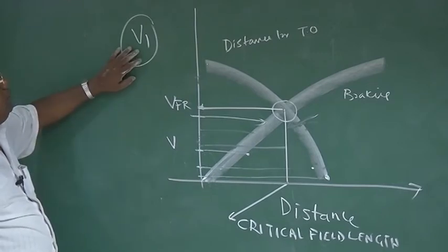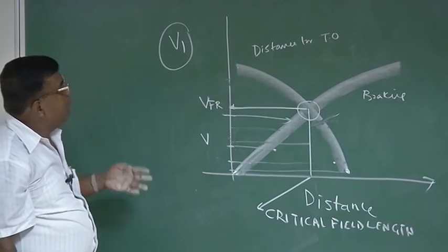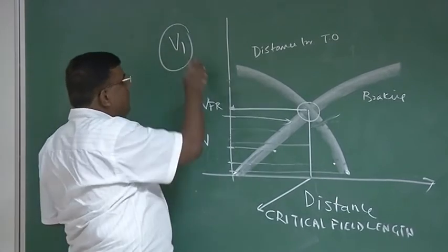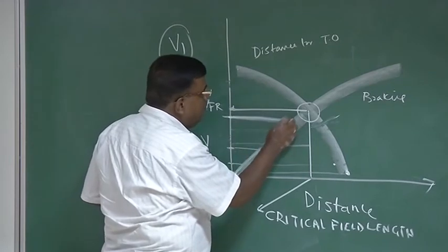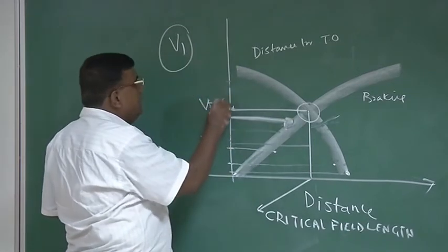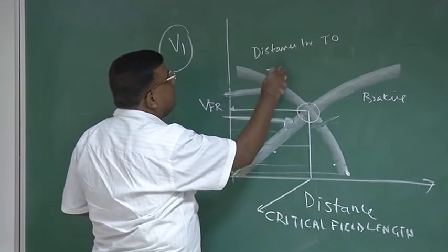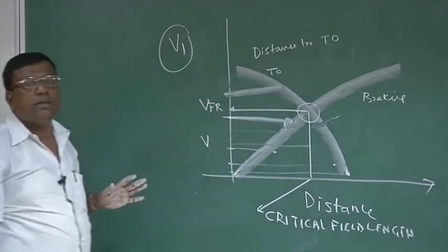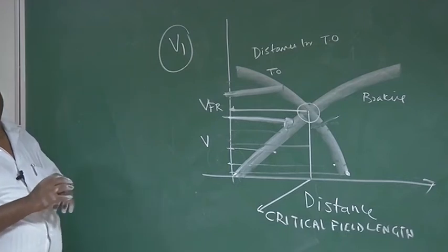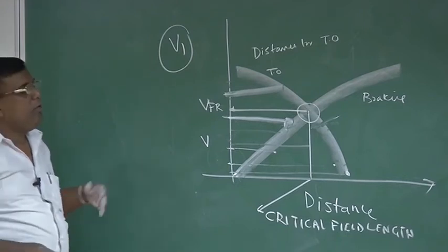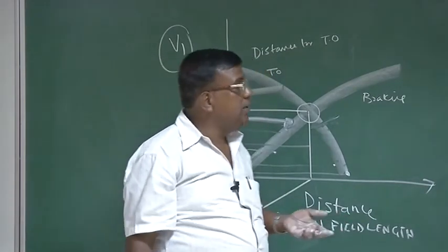There is a point where both the braking distance and the takeoff distance are the same. That distance is called the critical field length, also known as the balanced field length. The corresponding speed is called VFR. At VFR, the braking distance and the distance to take off are equal — that is why it is called critical or balanced field length. Suppose the aircraft failure speed is V1: if V1 is less than VFR, the pilot goes for braking; if V1 is more than VFR, the pilot goes for takeoff. This way you can avoid many accidents, which is why the critical field length is so important for twin or multi-engine aircraft.